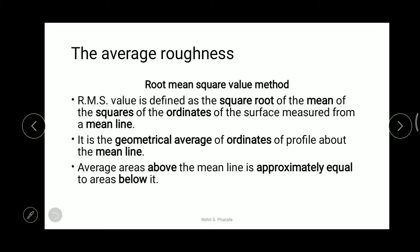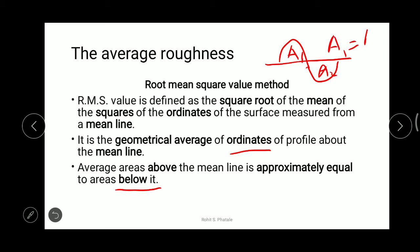We add all the squared ordinates, divide by the count of the ordinates, and take the square root. Also, the average areas above the mean line are approximately equal to the areas below it — so A1 is equal to A2 according to the root mean square value method.